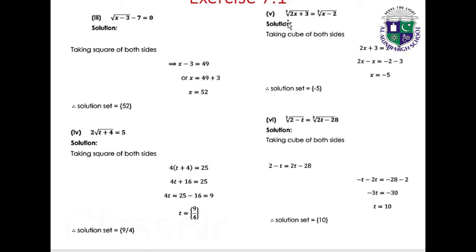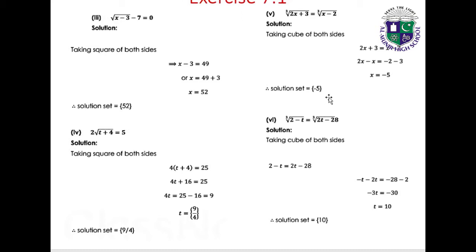Part 5: 3√(2x plus 3) equals ∛(x minus 2). Taking the cube of both sides: 2x plus 3 equals x minus 2, giving x equals minus 5. Solution set: {9/5}.